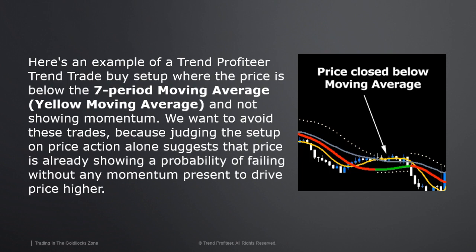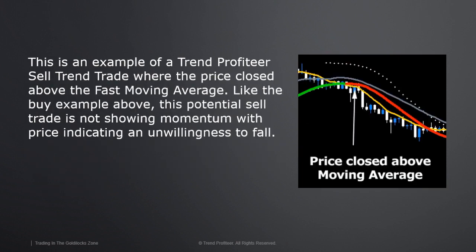Here's an example of a Trend Profiteer trend trade buy setup where the price is below the seven moving average — the yellow moving average. Anywhere below it is not above it. For a trend trade, we want to see price action above that moving average, because we're trading it in the belief that it's going to continue to rise. If at the time of the trend trade, price is below the fast moving average, that's not a good sign — it's showing fatigue in the price and a lack of willingness to move in the expected direction.